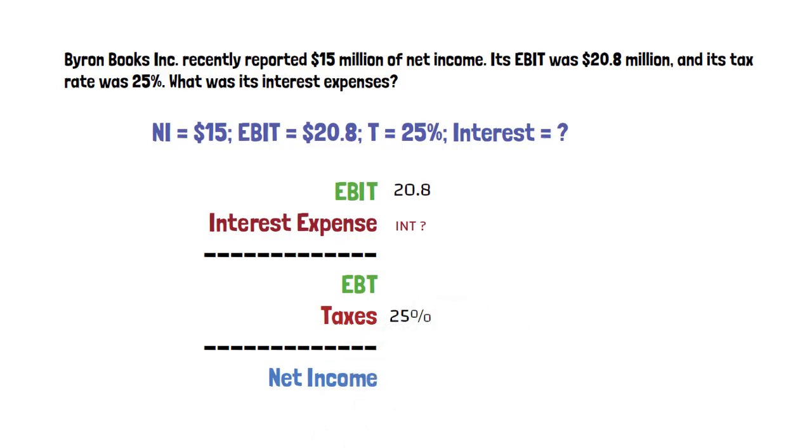Tax rate is 25 percent. Net income is also given, $15 million. We subtract interest expense from EBIT which gives us EBT.